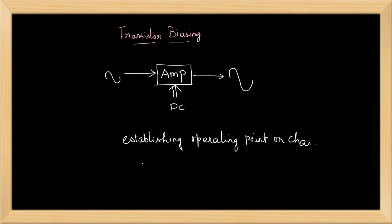So operating point is nothing but the fixed point or quiescent point or Q point. The biasing circuit can be designed such that the operating point lies in the active region of the transistor.